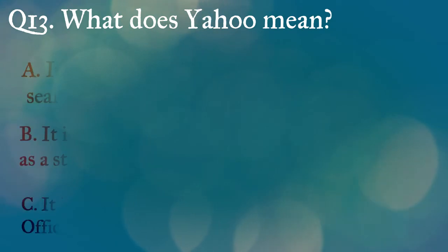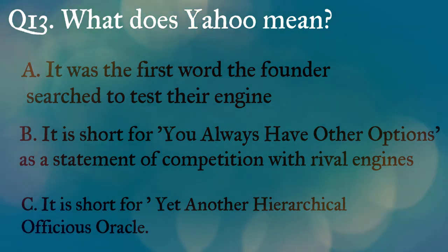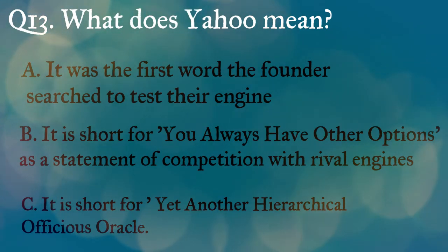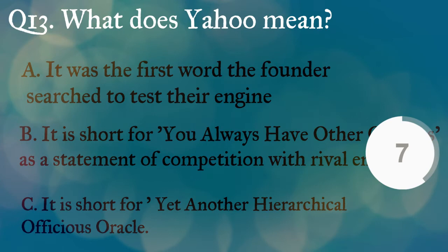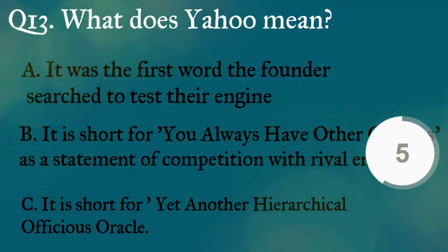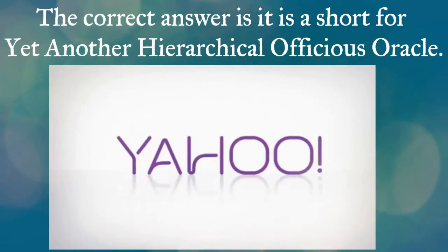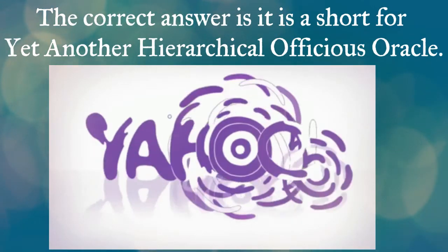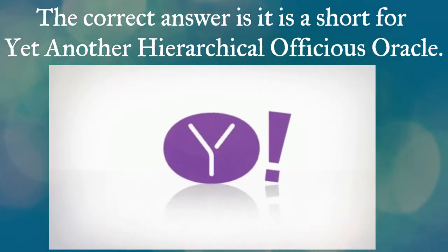Question thirteen: what does Yahoo mean? A) it was the first word the founder searched to test their engine, B) it is short for 'You Always Have Other Options' as a statement of competition with rival engines, C) it is short for 'Yet Another Hierarchical Officials Oracle.' The correct answer is it is short for 'Yet Another Hierarchical Officials Oracle.' Good job if you knew that!